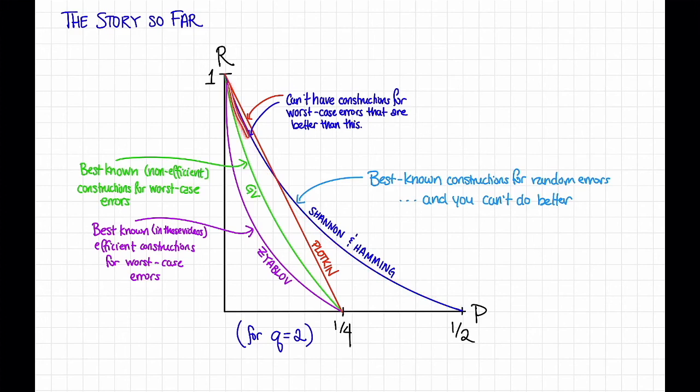So this is in pretty stark contrast to the worst case error case. For worst case errors, we had this impossibility result, Hamming's bound, and then we had some other impossibility results, like the Plotkin bound. And our best possibility results, at least that we've seen so far, the Gilbert-Varshamov bound and the Zyablov bound lie way below the impossibility results. So there's this whole region of uncertainty where we don't know whether or not there exist codes in that region. We have no such uncertainty for random errors. This curve, 1 minus the binary entropy of p, is just the right answer. That's just the capacity of the binary symmetric channel. We cannot get rate any better than this, but we can get rate approaching this. So that's pretty cool. It's very clean.